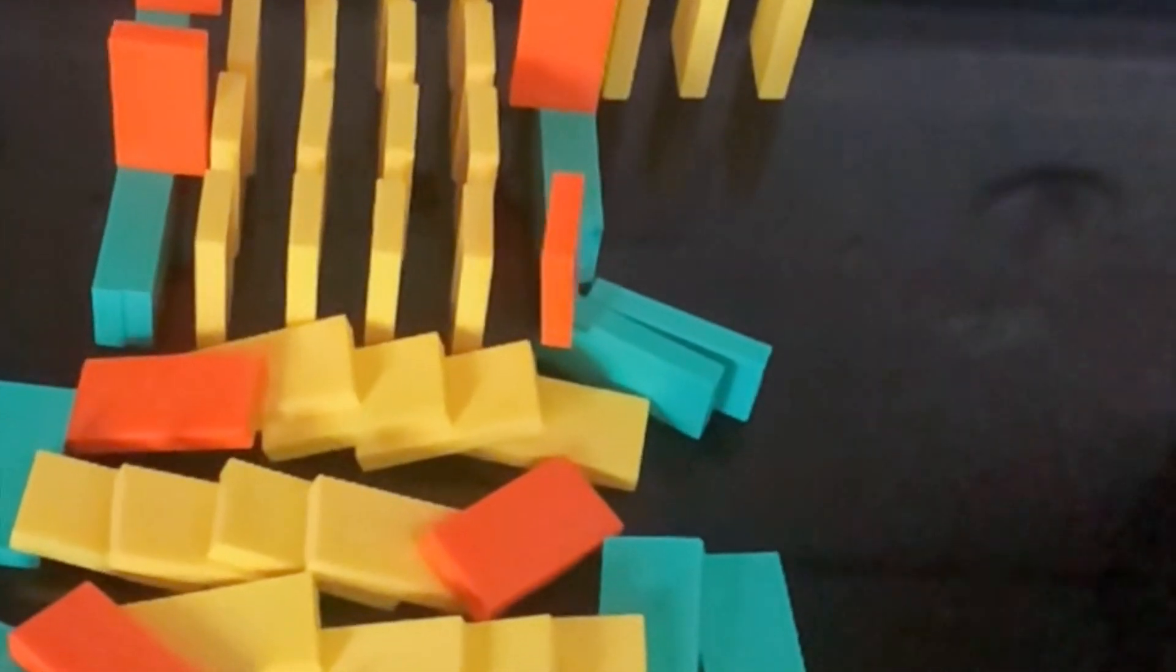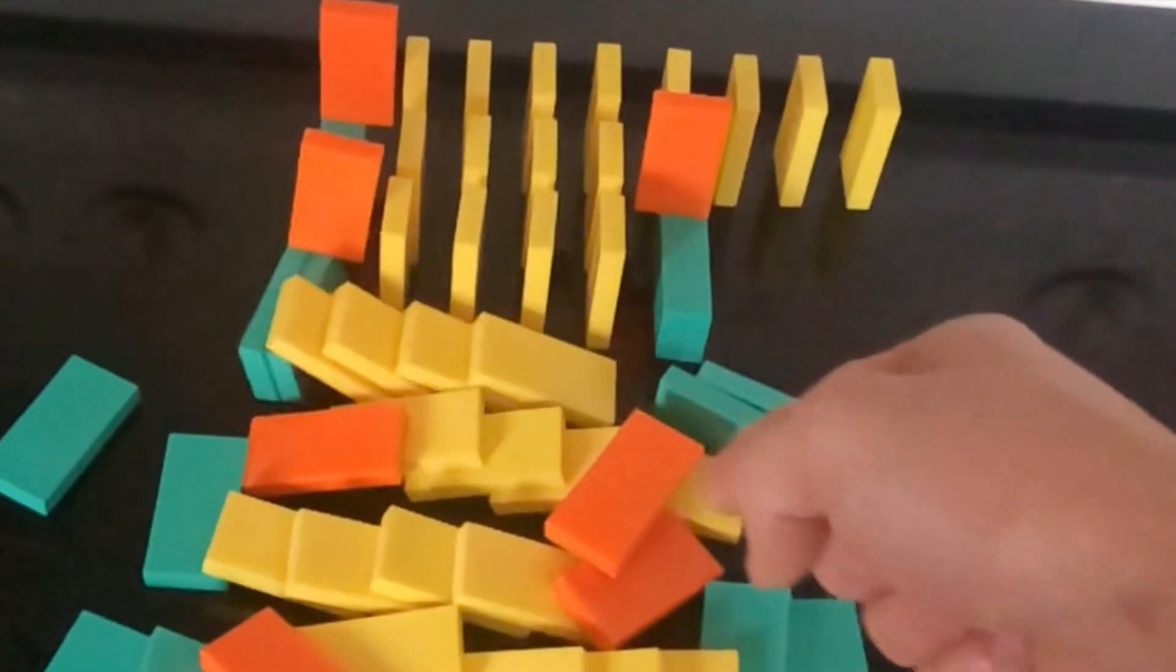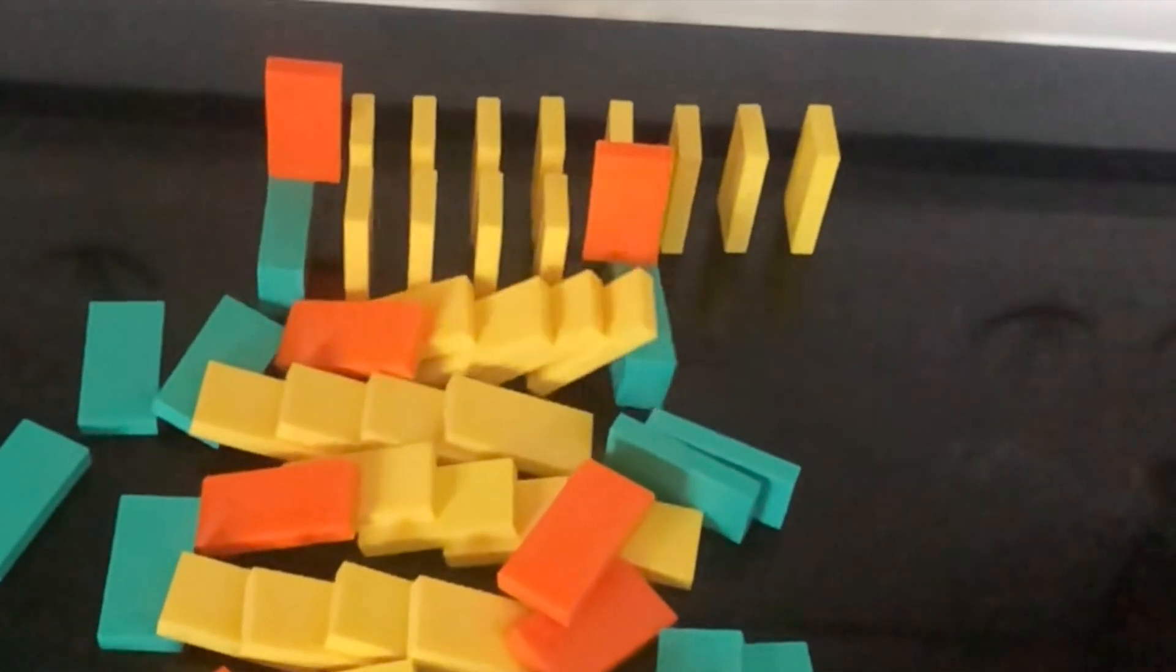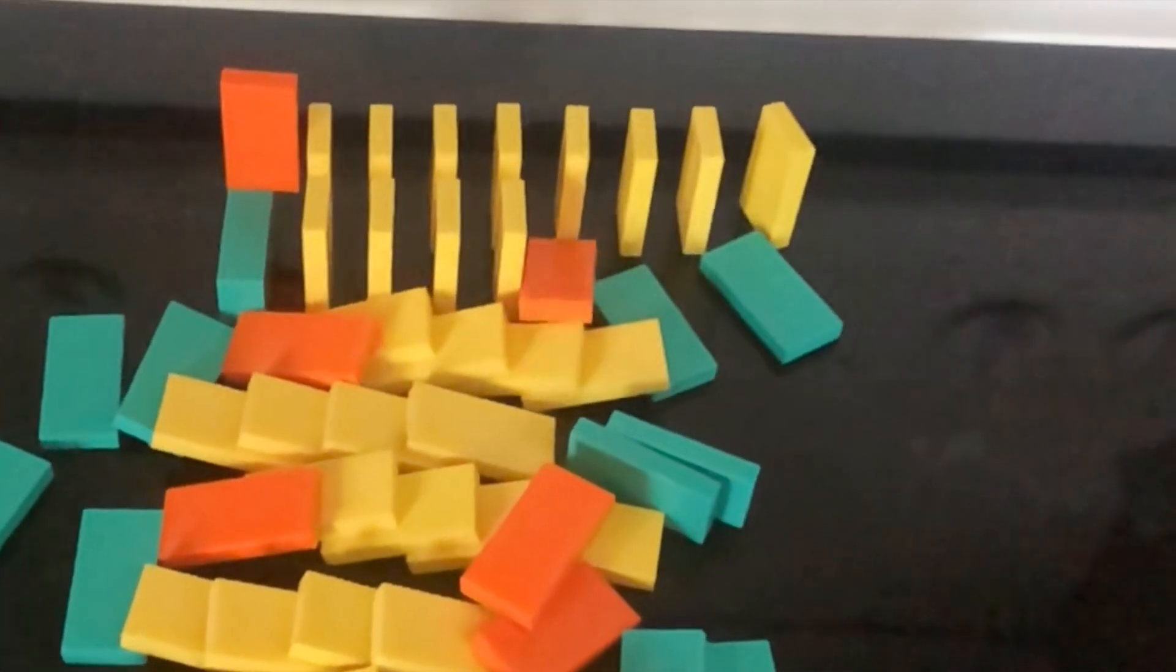We should leave a little bit more space between the rows to help prevent this. Then onto the second failure. You'll notice that the teal dominoes get knocked out from underneath the setup.